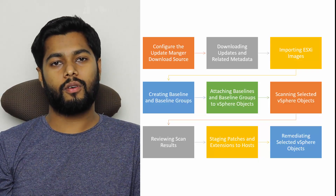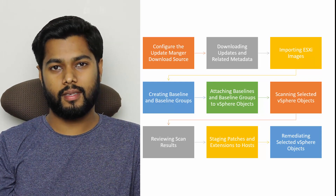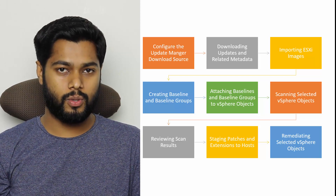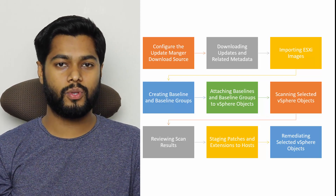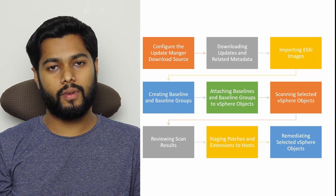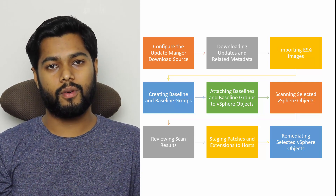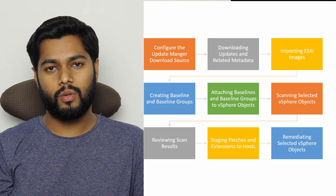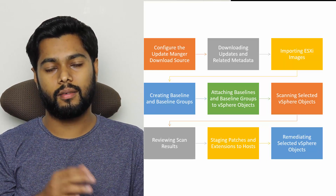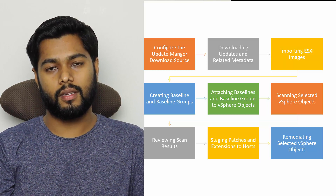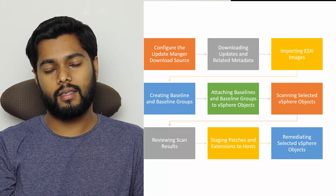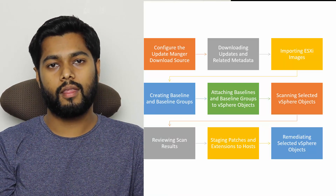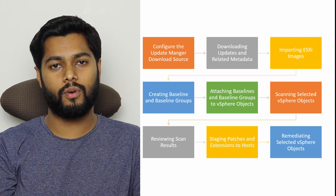Before the demo, let's go through the processes in VMware Update Manager. The first part is to configure the download source. In this demo we're going to use the internet as the download source. The default links are already configured in VMware Update Manager, so you have nothing to configure for ESXi patches. If you have third-party tools or extensions to download and patch, you can add links for those. UMDS is the other option for secure environments, which we'll cover in a separate video.